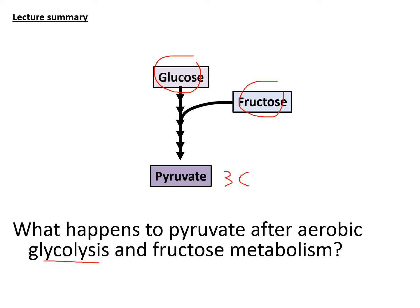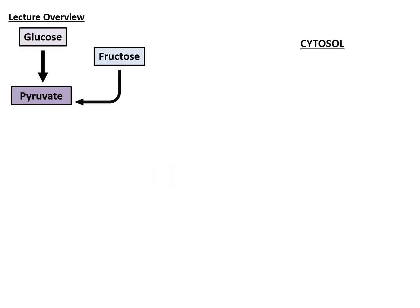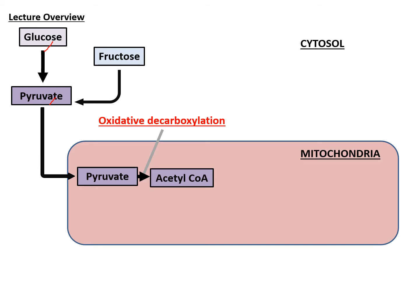After you get the pyruvate molecule, it will have to go through oxidative decarboxylation, which is the process we discuss in this session. Pyruvate is the end product of glycolysis and will then be imported into the mitochondria by a specialized transport protein. Upon arrival in the matrix of the mitochondria, the three-carbon pyruvate will be decarboxylated to become the two-carbon acetyl coenzyme A.